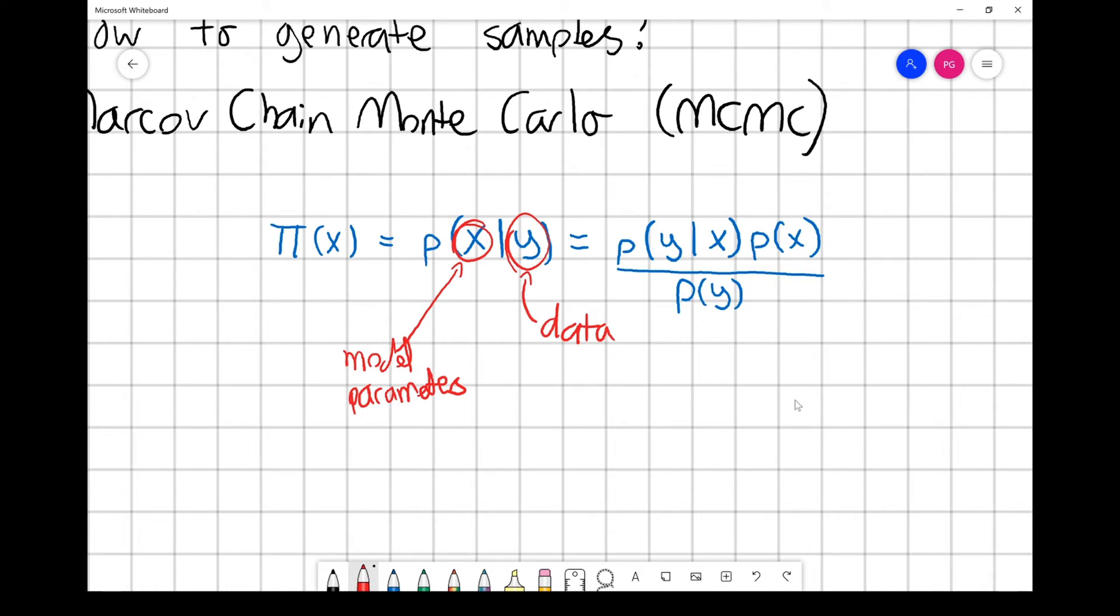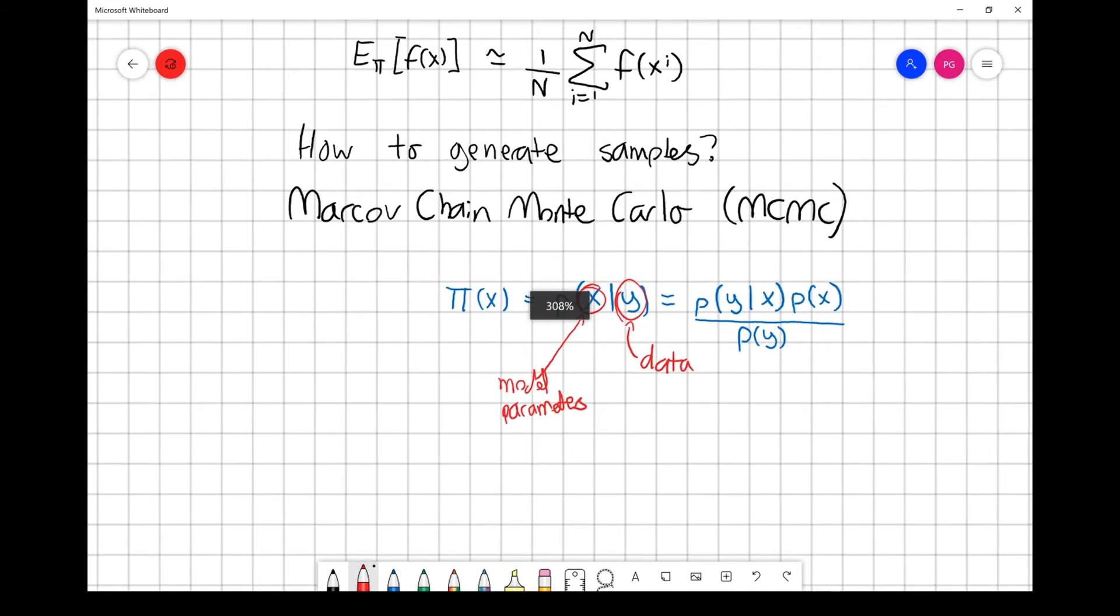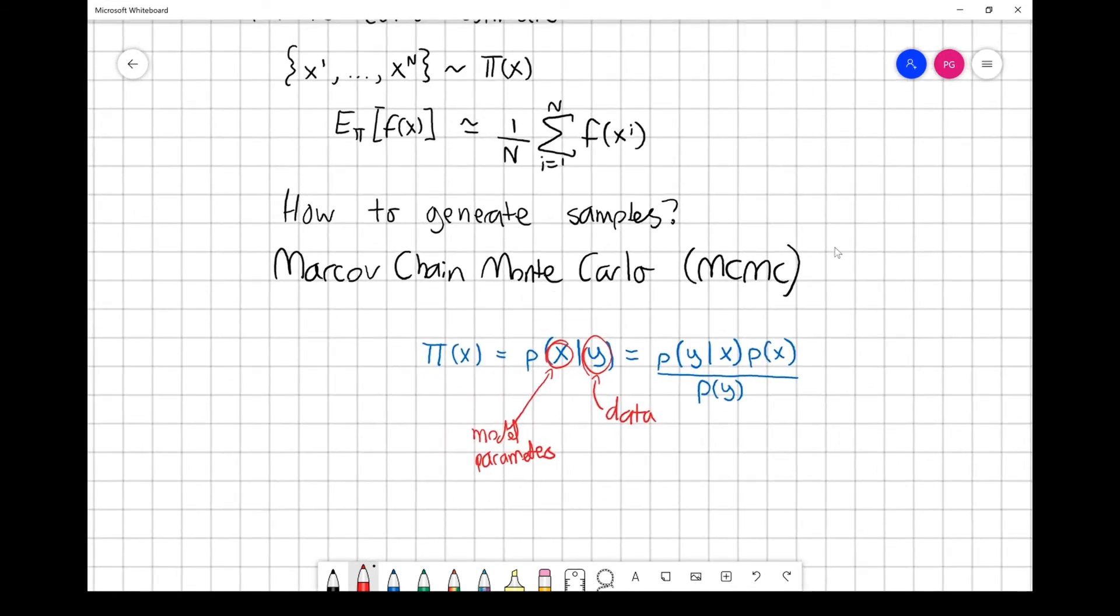Some of the time you can use Bayes' theorem to get a closed form solution for the posterior probability distribution. That's usually only because we've been quite careful about how we choose the likelihood and the prior. Most of the time, if you have a non-linear model, Bayes' theorem will give you a non-standard distribution. But it's a distribution that you can evaluate at any point. We can substitute a value of X and evaluate Bayes' theorem at any point X, but it's still non-standard, so it's difficult to generate samples from. That's why we might need Markov Chain Monte Carlo.